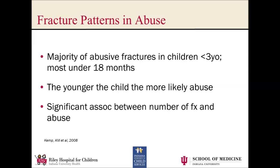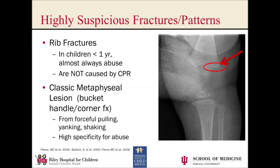There are some fractures that all by themselves should make us worry. Rib fractures are at the very top of that list. In a child under a year of age, rib fractures are almost always abusive, and they are not caused by CPR. In addition to rib fractures are corner fractures, also called bucket handle fractures or classic metaphyseal lesions. This occurs from forceful pulling or yanking on a child and is virtually pathognomonic for abusive injury. You need to look very carefully to identify these fractures, but if you do see them, you need to be very, very worried for inflicted injury.